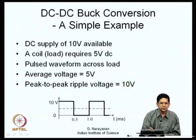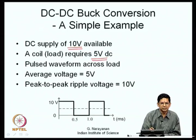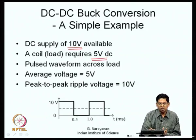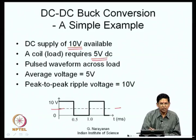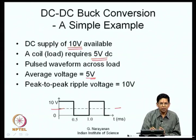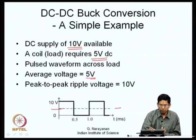Consider a simple DC to DC buck conversion example. If we have a 10V DC supply but a load requiring 5V DC, we can apply a pulsed voltage waveform — 10V for a certain interval and 0V for the remaining interval — cyclically. If 10V is applied for 50% of the time and 0V for the other 50%, the average voltage is 5V. However, this is not pure DC — there is a ripple with a peak-to-peak value equal to 10V.